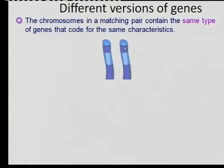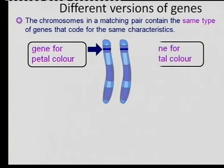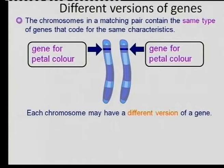So what are the genes or the versions of genes? For instance, we will use the color of petals. As you look at that gene, that gene codes for a certain color. On the homologous chromosome, the other chromosome has the same locus, the same gene or characteristic, namely the color of the flower.